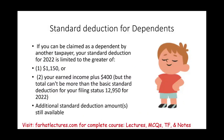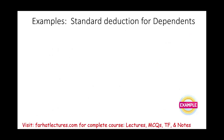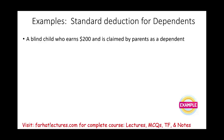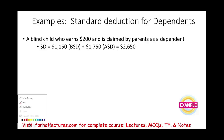Additional deductions are available for blindness. A blind child who earns $200 is claimed by their parents as a dependent. Their standard deduction is the basic $1,150 plus the additional standard deduction for blindness, for a total of $2,650. If they have no income, that's their standard deduction. If they have earned income, we'd take $400 plus their earned income and only use it if it's greater than $2,650, but it cannot exceed the standard deduction maximum.